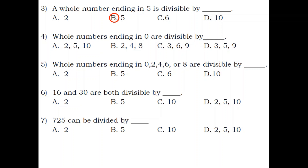Number 4. Whole numbers ending in 0 are divisible by blank. A. 2. B. 5. C. 6. D. 8. Answer: A. 2, B. 5, and 10.